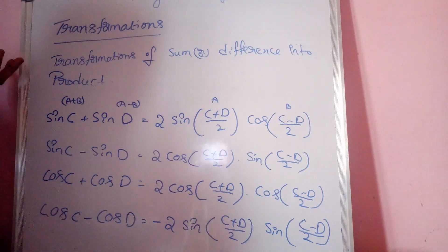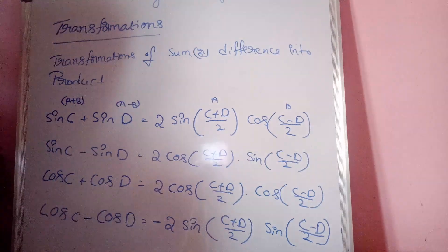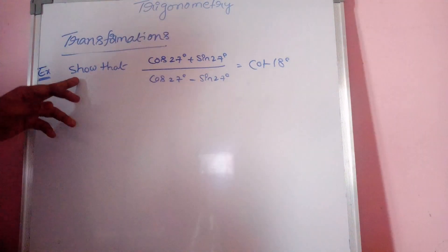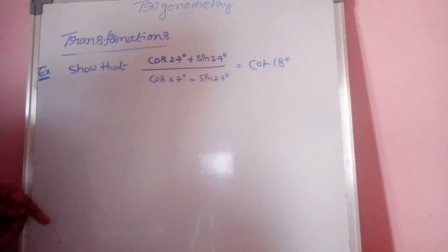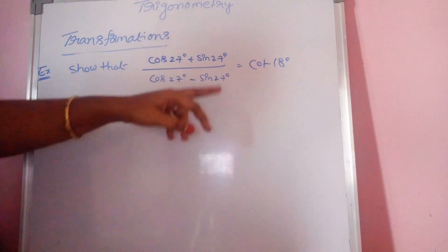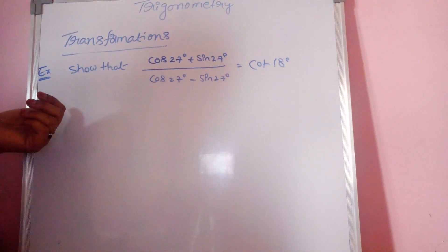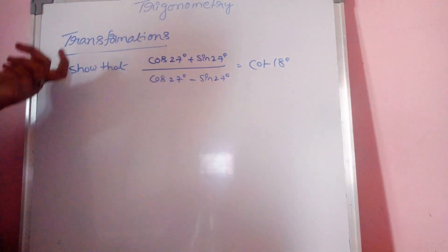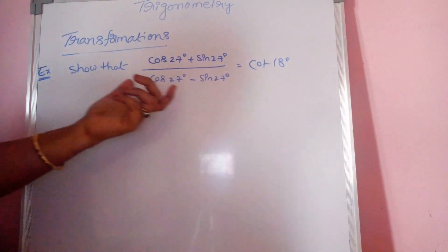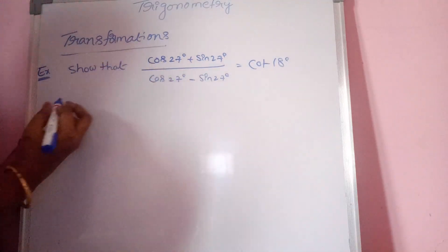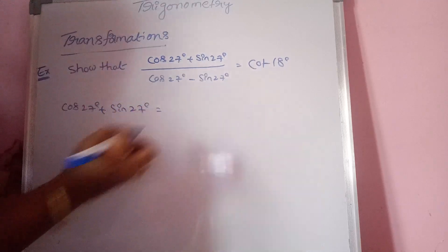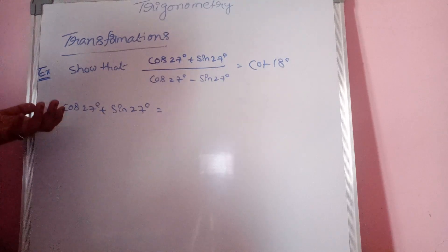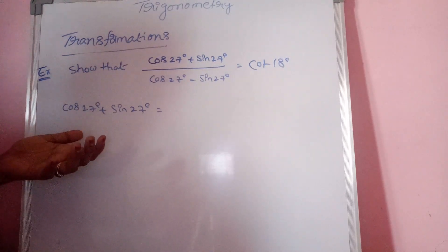Now let us see some examples using these formulas. Show that (cos 27° + sin 27°) divided by (cos 27° − sin 27°) is equal to cot 18°. First, we take the numerator: cos 27° plus sin 27°. The transformation formulas involve sin C plus sin D or cos C plus cos D.